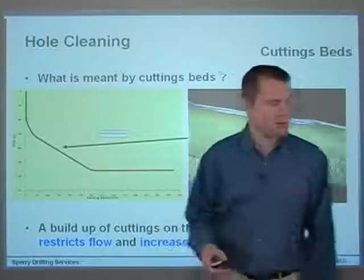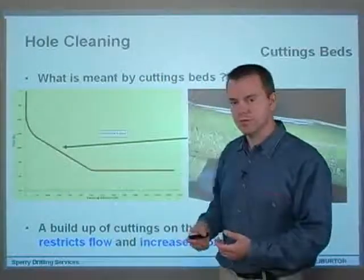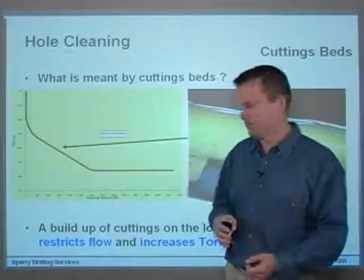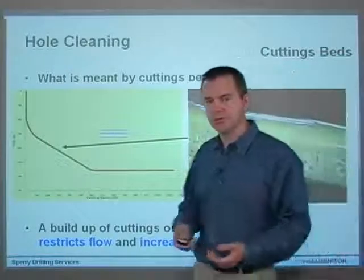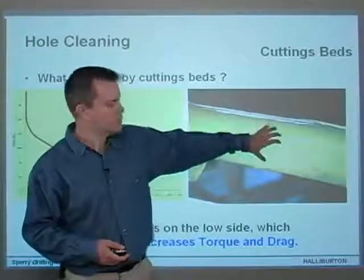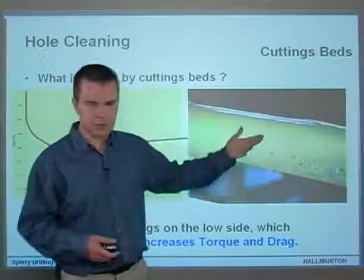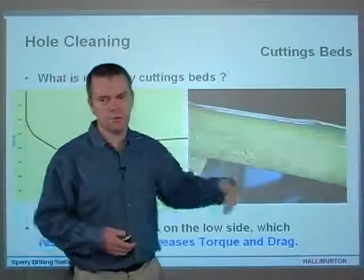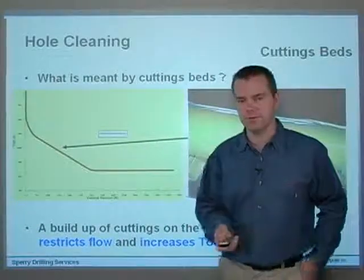The cuttings bed restricts flow — as you can see, it's taking up some of the wellbore, restricting annular flow and making the annular diameter less than it would be if the wellbore was clean. It's also increasing torque and drag. If the bed comes up over halfway, the pipe is going to be stuck in the cuttings. If you try to pull the pipe up or down, or even rotate it, you'll have to increase torque, pull harder, push harder, or slack off more weight to get it to move.